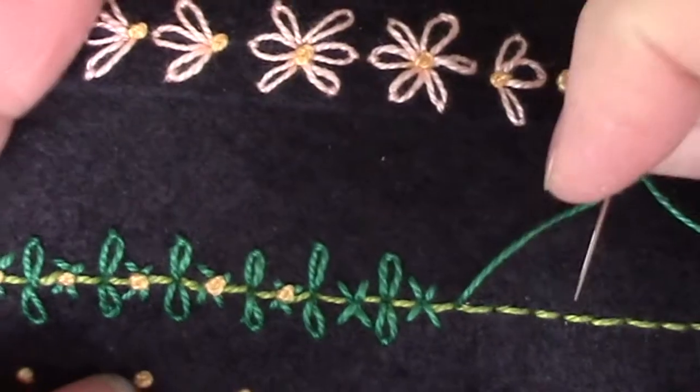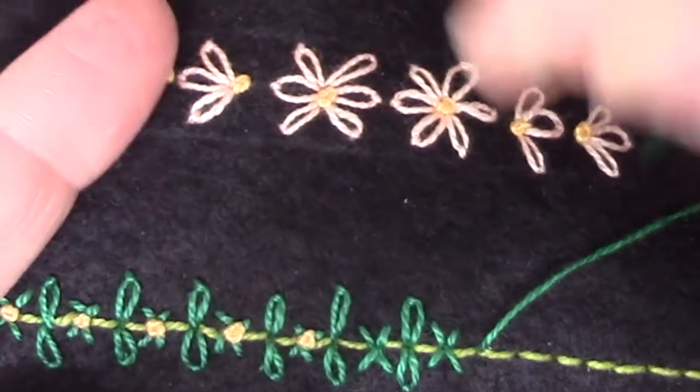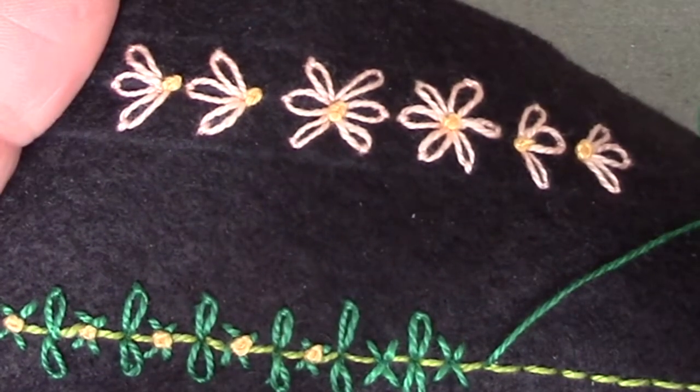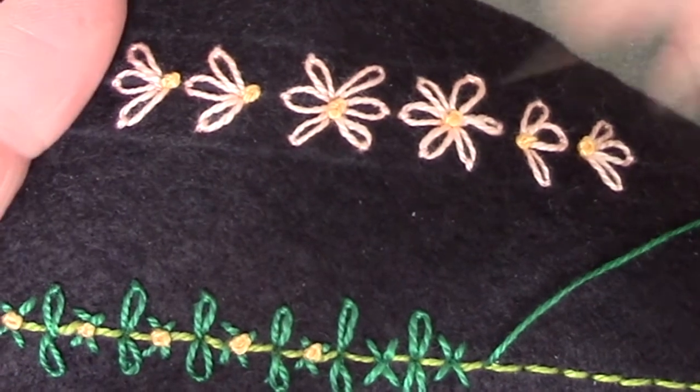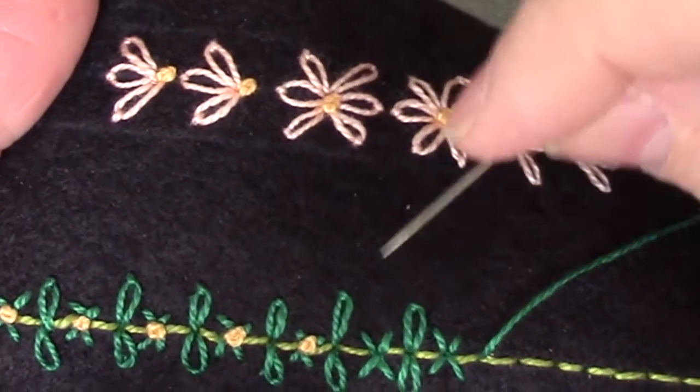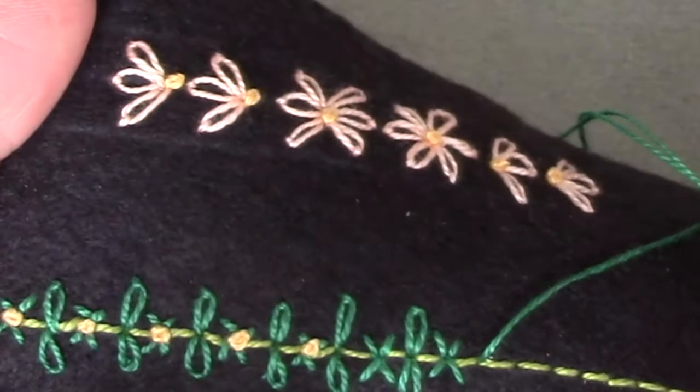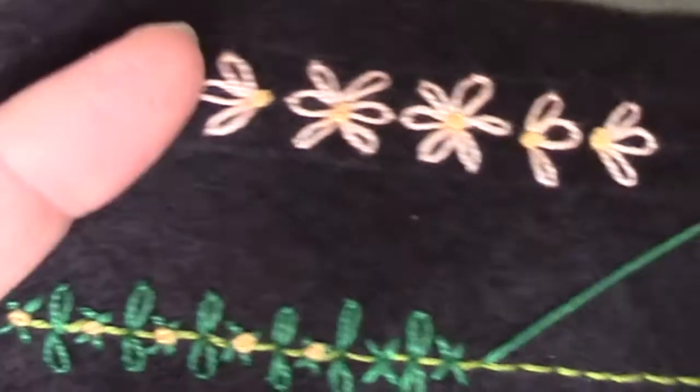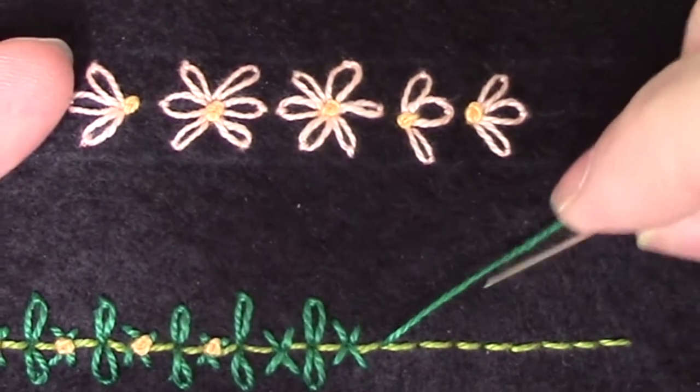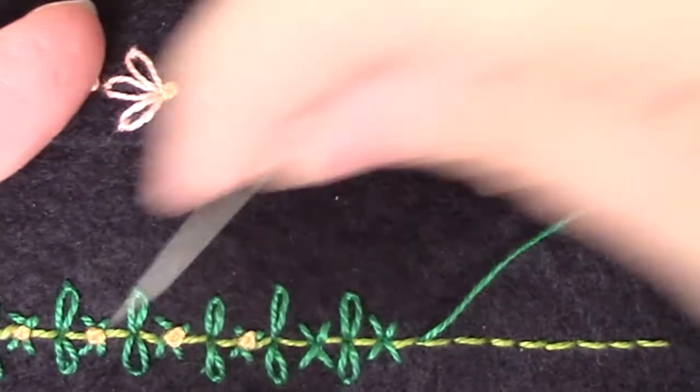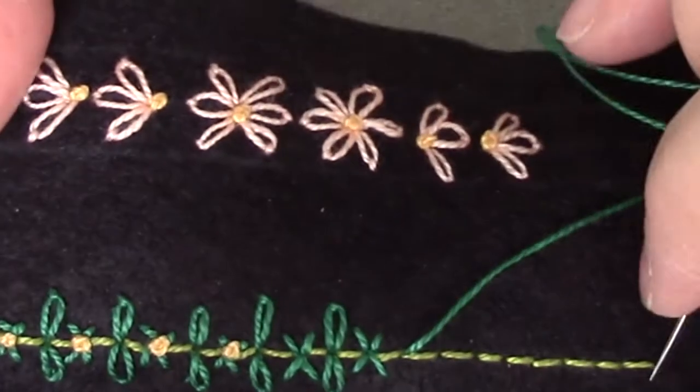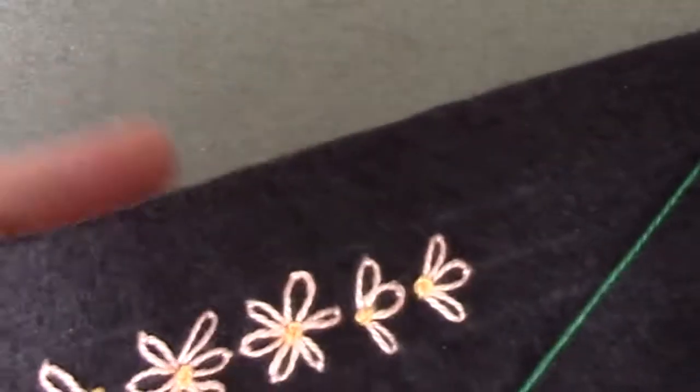This next combination is a combination of lazy daisy, straight stitch, and French knot. I thought it would be easier to keep your spacing consistent if the straight stitches that were going on the horizontal were done with a large back stitch. And then I could come in and add my lazy daisies and my other straight stitches. So I did a large back stitch on a horizontal line.